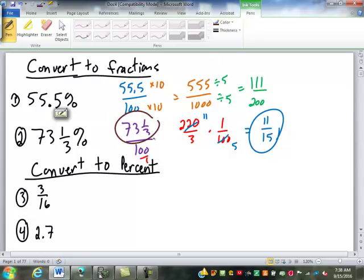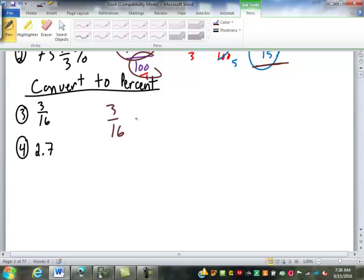So you're basically just dividing the 73 and a third by 100. Convert to percent, it's 3/16. You could divide it out to a decimal and move it, or we just use the proportion. 3 times 100 divided by 16 is 18.75. So that's 18.75 out of 100, you're 18.75 percent.